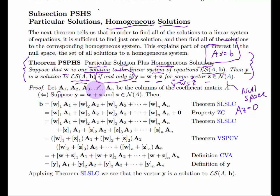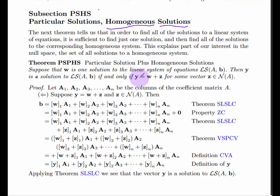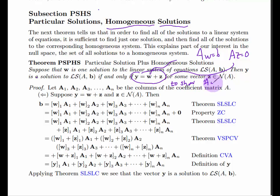Let's go through the proof. A1 through An denote the columns of the coefficient matrix. We're proving the first implication: supposing that W is a particular solution and that Y equals W plus a vector Z in the null space. What we want to show is that Y is also a solution to AX equals B.